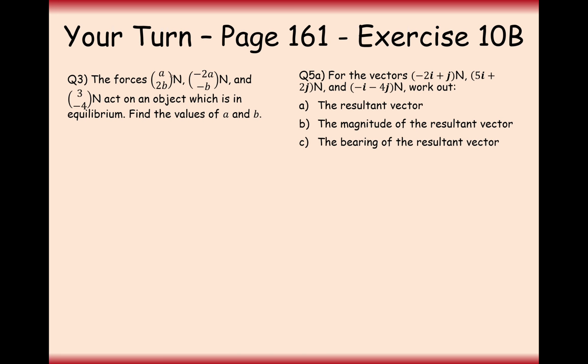All right then, question three gives us three forces: a to b, minus a to b, and 3 minus 4, acting on an object that's in equilibrium. Find the values of a and b. As our forces are in equilibrium, we should be able to add them together and work out what a and b is. You can also do this in column notation as well if you prefer. You can always switch between column notation and i j notation as you wish. This is going to be minus a plus 3, and this is going to be b minus 4. If we want something to be in equilibrium, then it must be equal to the zero vector. Therefore, a is equal to 3, and b is equal to 4.